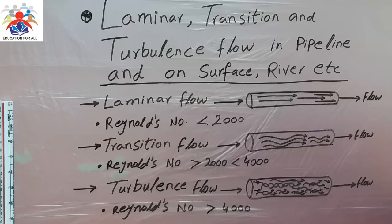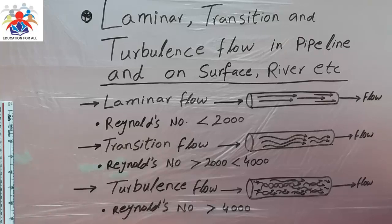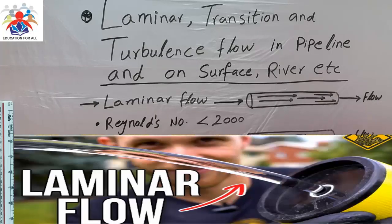Before explaining whether our flow is laminar, transition, or turbulence, I would like to explain the Reynolds number. The Reynolds number is an indicator which explains whether the flow in a pipeline is in the laminar, transition, or turbulence zone.